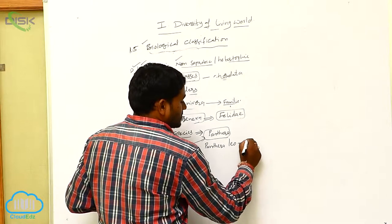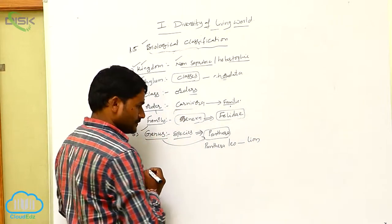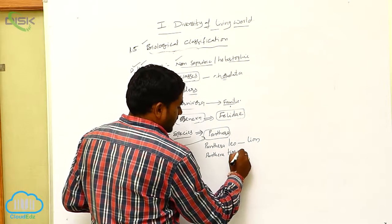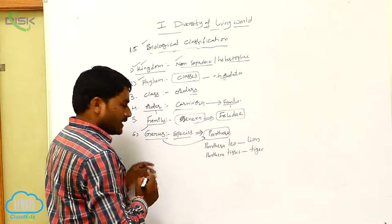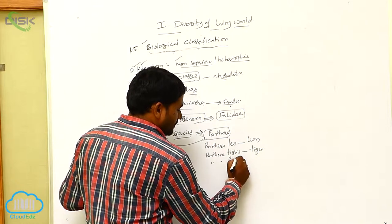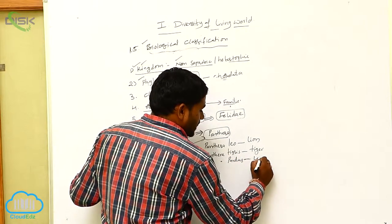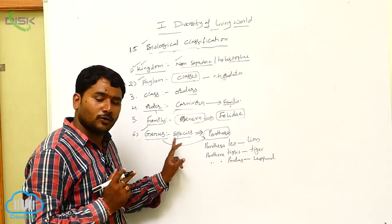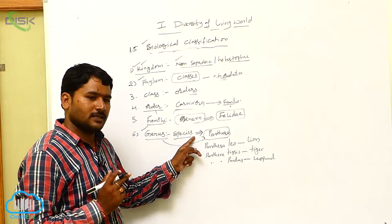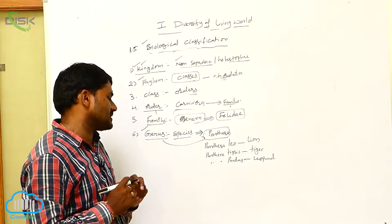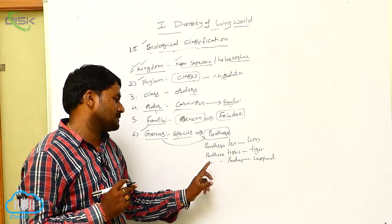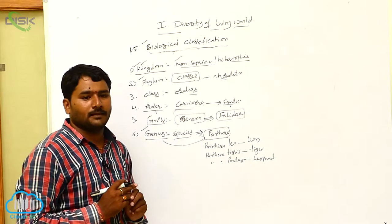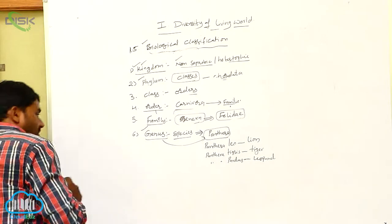Panthera leo is the scientific name of the lion. Next, Panthera tigris is called the tiger. Next, Panthera pardus is the scientific name of the leopard. So, genus Panthera is a group of closely related species: Panthera leo, Panthera tigris, and Panthera pardus.